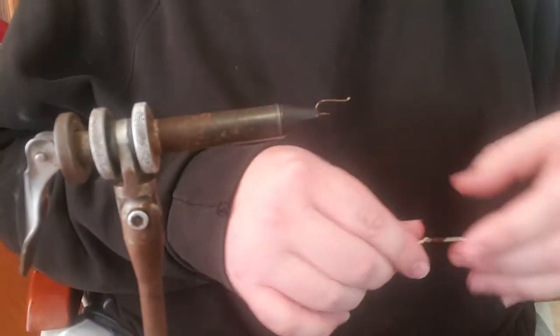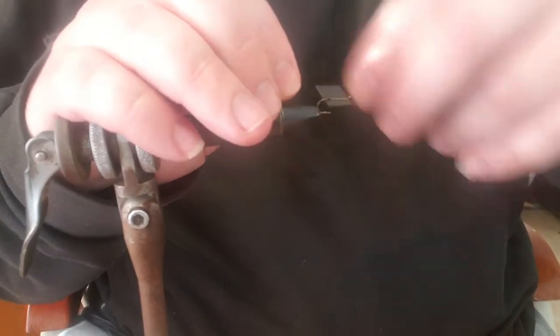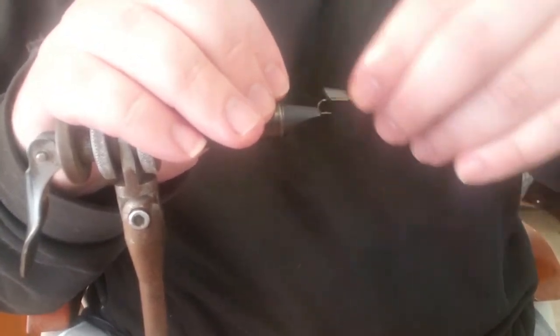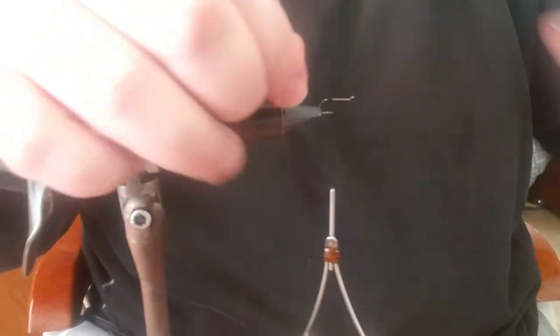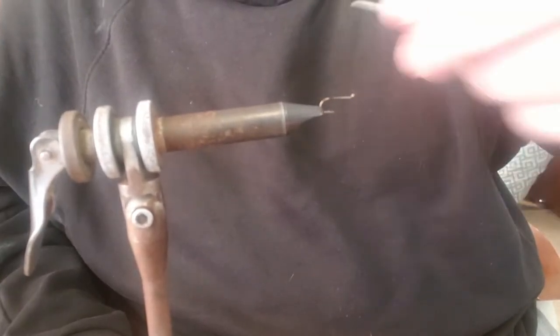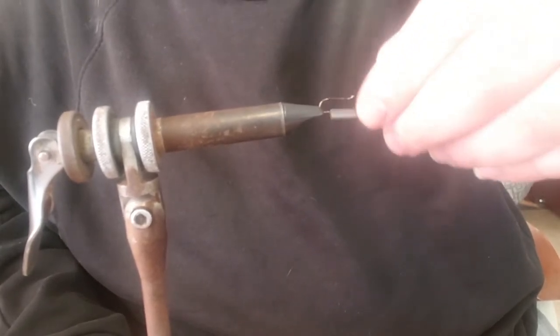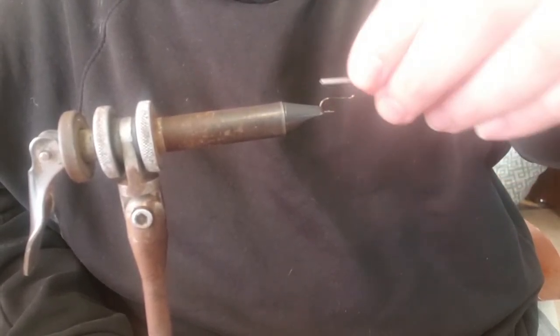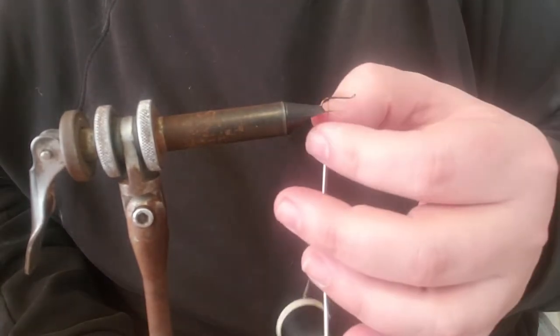I'm going to use black thread. Let me put it on there, snip off the excess. Go up and back real quick, then go down to about where the barb is.